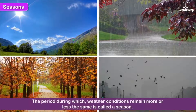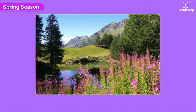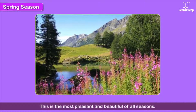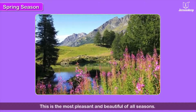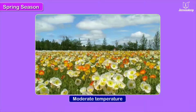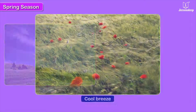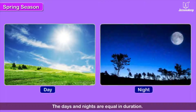If the weather conditions remain more or less the same, it is called a season. Spring season — this is the most pleasant and beautiful of all seasons. It is characterized by moderate temperatures and cool breeze. The days and nights are equal in duration.